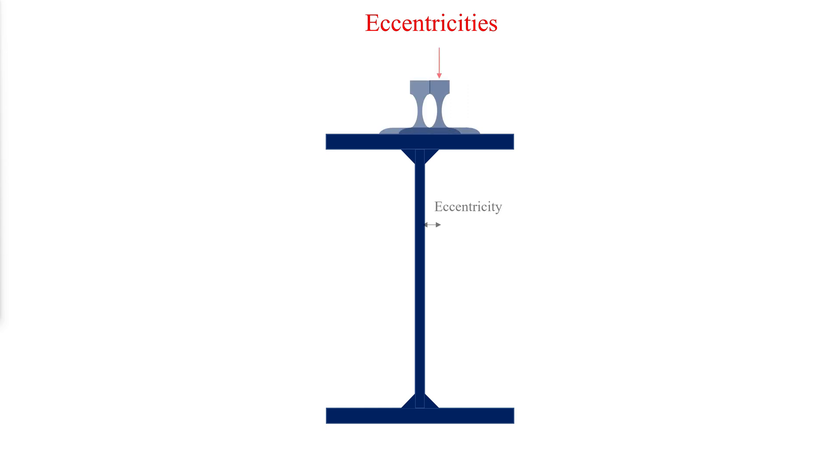Eccentricity of the rail to the girder center line should also be considered in the design. Under this condition, the vertical wheel loads induce torsion on the girder that is typically resolved into a force couple on the top and bottom flanges for design.